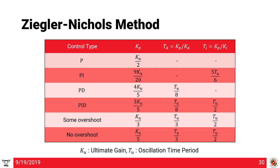There's a more formal method called the Ziegler-Nichols method for tuning your P, PD, PI, or PID controller. For certain oscillations with time period T_u, we can find KP, KI, and KD gains as a function of the ultimate gain K_u based on established tables. There's no formal proof for these methods, but it's a general rule of thumb.